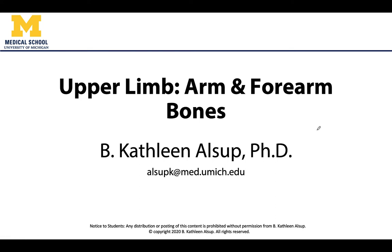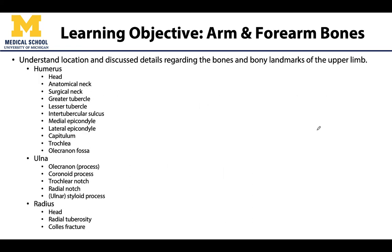Hello anatomy colleagues, it is Dr. Alsup and we are going to continue our discussion of the bones of the upper limb, focusing on the bone of the arm as well as the two bones of the forearm. There are quite a few structures we want to understand conceptually — where they are located, what attaches there, whether they form a joint, and any neurovasculature associated with that region.